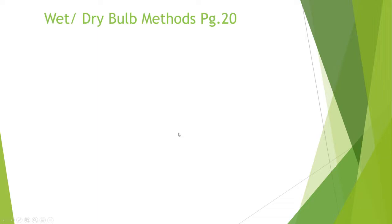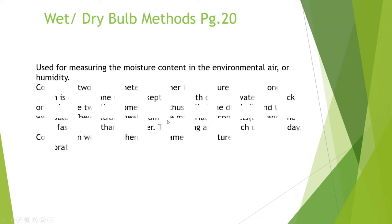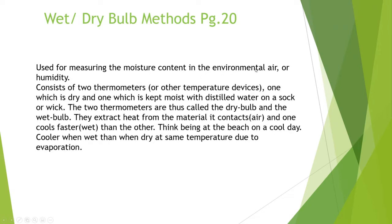Wet-dry bulb methods are relatively primitive but very useful and consistent. They are used for measuring moisture content in environmental air or humidity — basically a tool that gives us numbers from which we can derive lots of information. The bulk of this section covers wet-dry bulb methods and the application of measurements obtained using them.